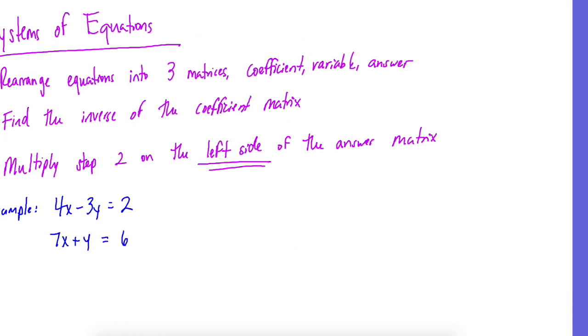System of equations. First of all, we have to make a coefficient matrix, which is just the numbers. That's going to be four, negative three, seven, and one, because there's a one in front of the Y. Your variable matrix is X and Y, and my answer matrix is two and six. Then what we do is we find the inverse of A and we're going to multiply it on the left-hand side of B.